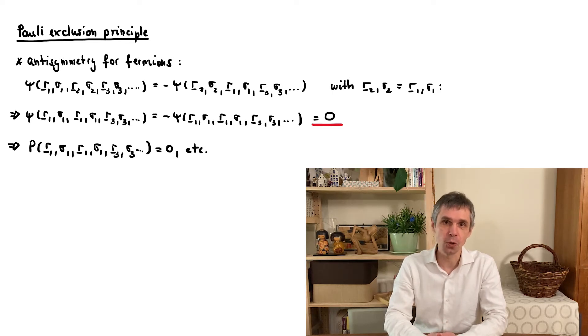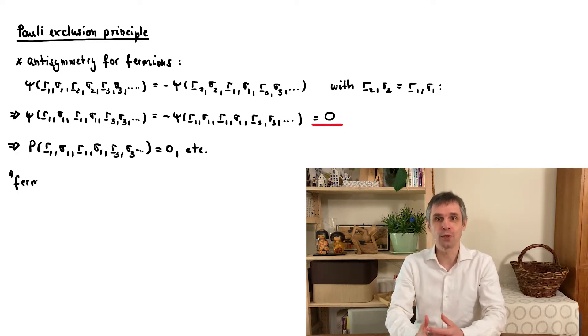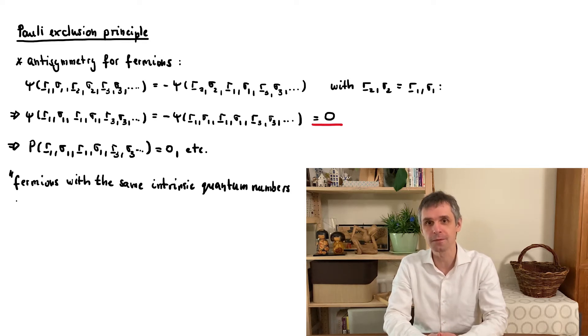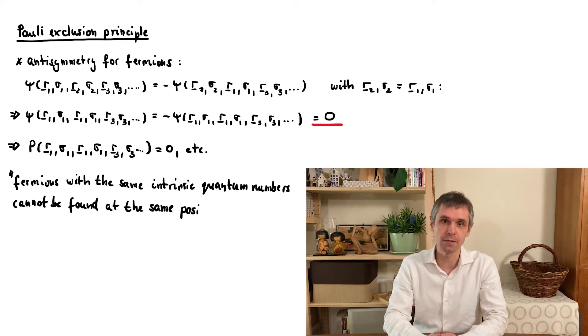This holds for any pair of labels. So put into words, we can never observe any indistinguishable fermions with the same position and intrinsic degrees of freedom. And this is already the Pauli exclusion principle in a very general form.